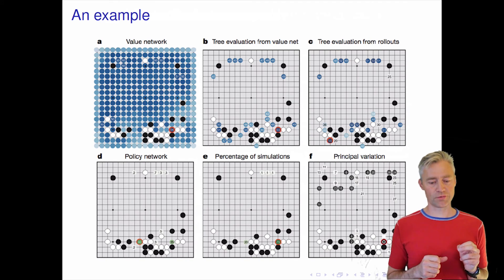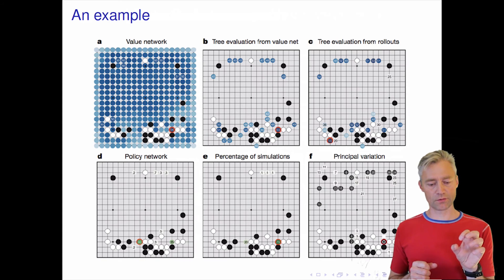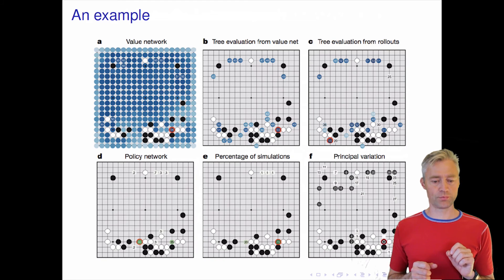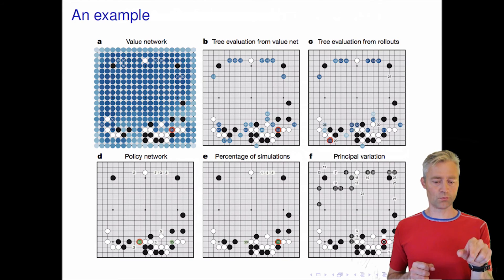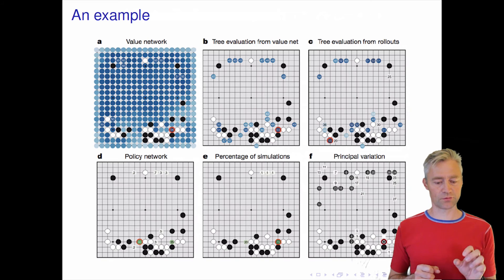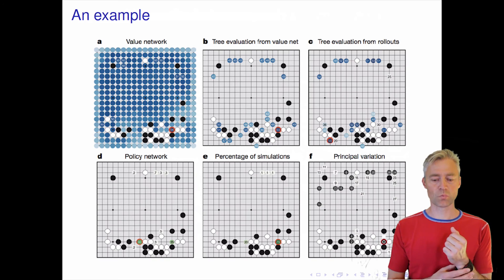If you just use the policy network, then you assign the highest probability for the next action of being this red circle with a green inside that has 60% probability, whereas our favorite move has only 35%. That shows that the policy network by itself makes a different solution.